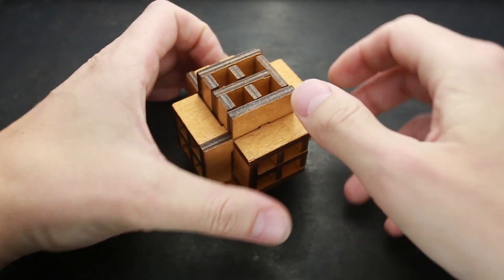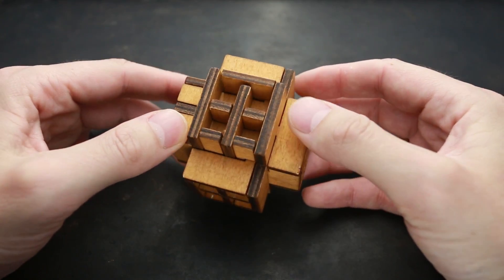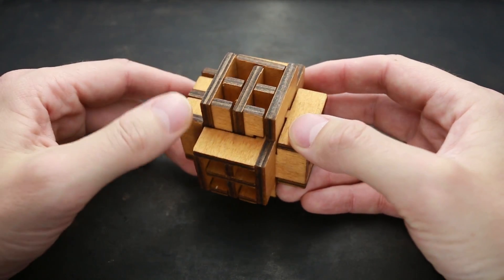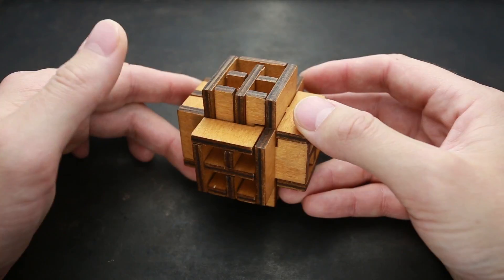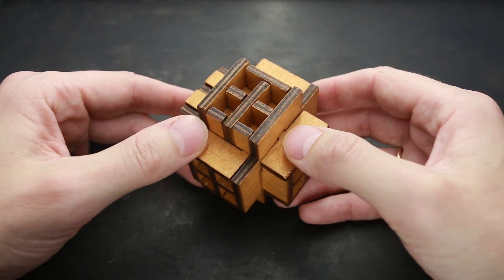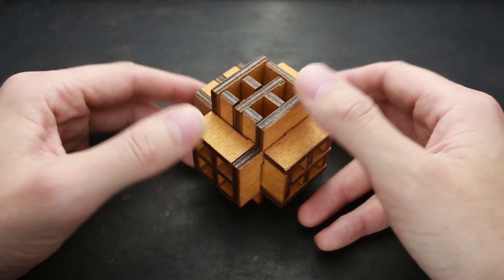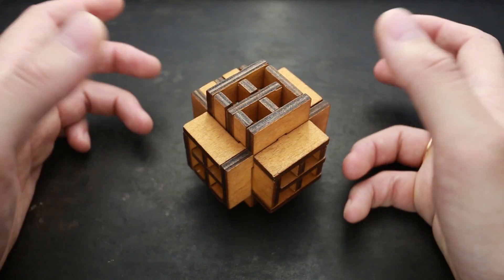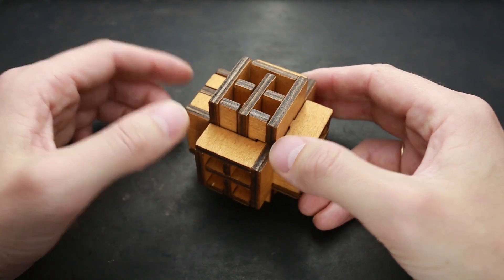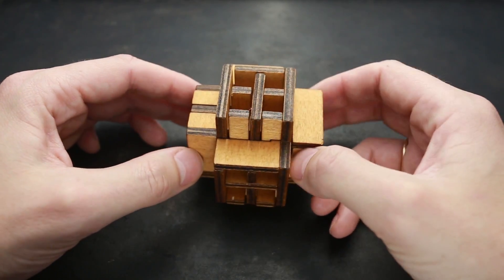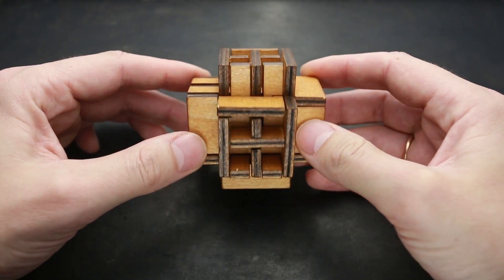So the puzzle has nine parts and the goal of this puzzle is to take it apart and to assemble it again. And the disassembling part is very easy. Anyone can do it, even a child, but the assembling part is very difficult.